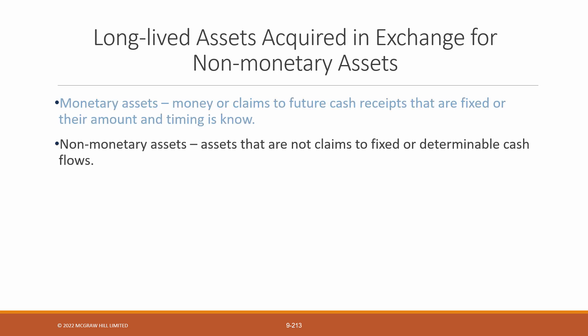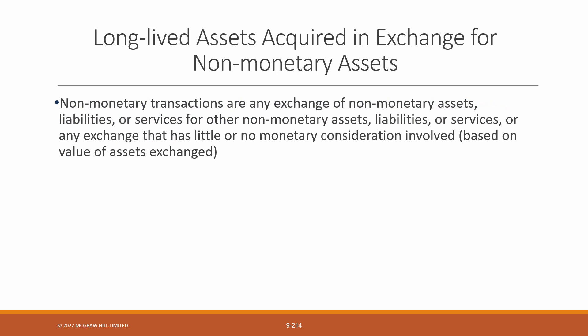Non-monetary assets are everything else — all the assets which are not claims to fixed or known cash flows. Examples include things like inventory, property, plant and equipment, and equity investments in other companies. So now that we understand what a non-monetary asset is, we can better understand a non-monetary exchange. It's when one entity's non-monetary asset, liability, or services is exchanged for another entity's, with little to no monetary consideration involved — so little to no cash or accounts receivable involved.